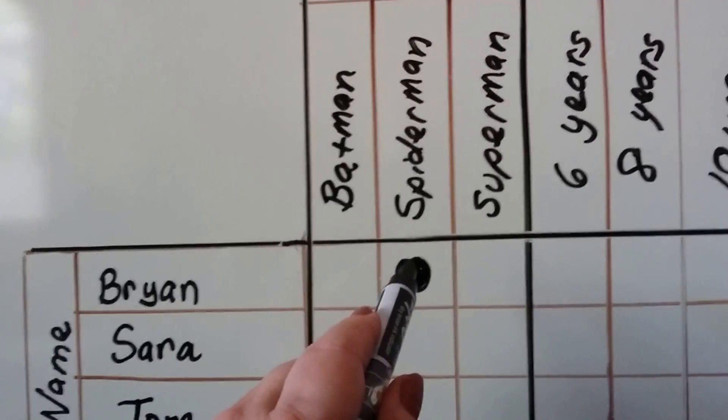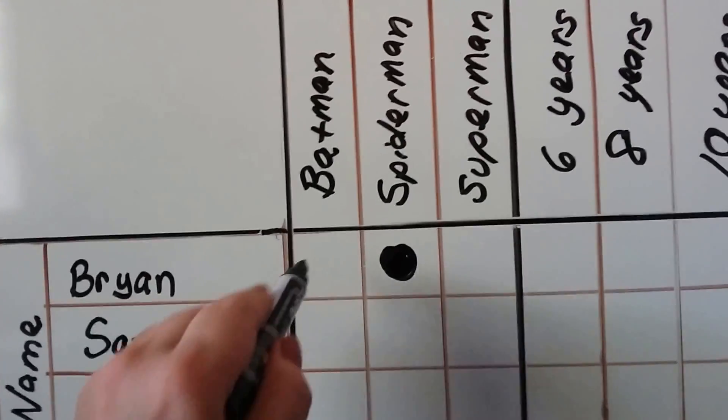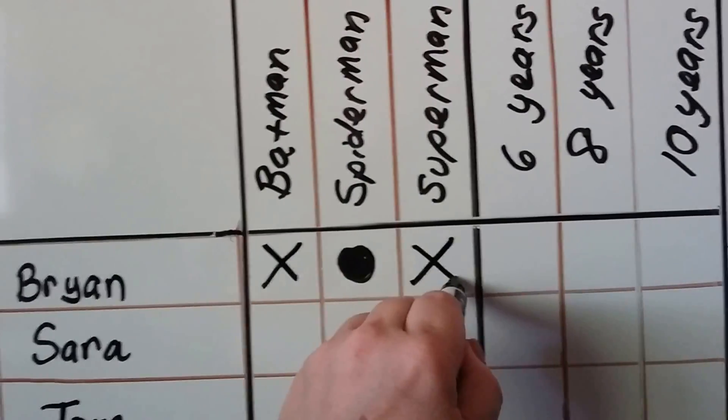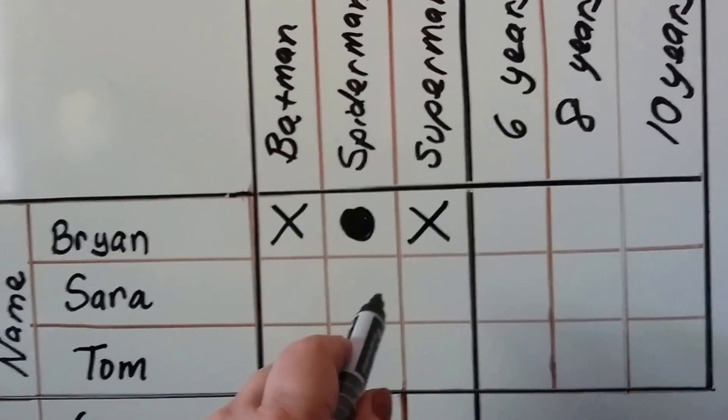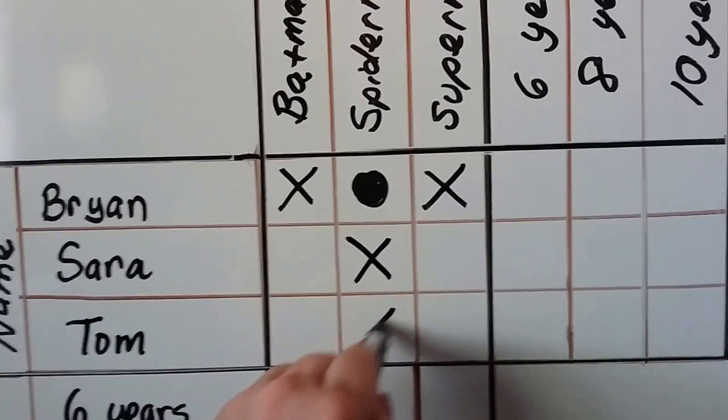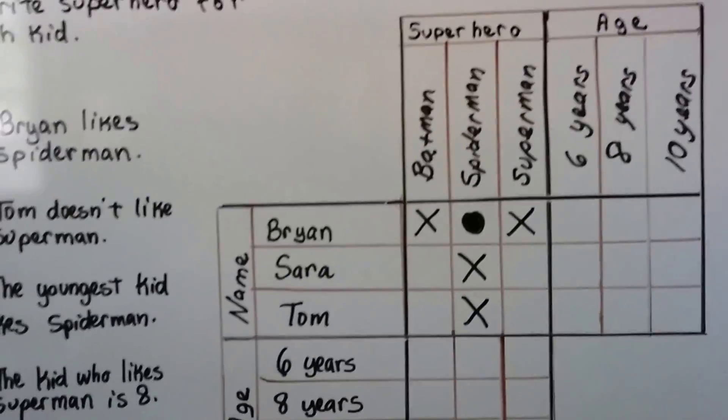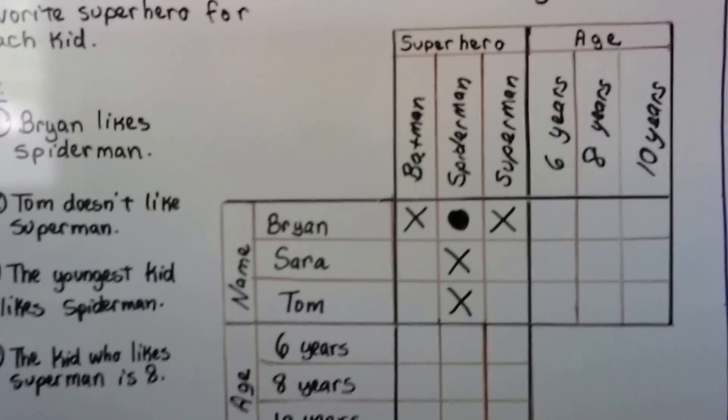If Brian likes Spider-Man, then he doesn't like Batman, so we can put an X here. And he doesn't like Superman. And if Brian likes Spider-Man, then we know Sarah and Tom don't, so we can put X's for them. Just from that one piece of given information, we've been able to fill in five boxes.